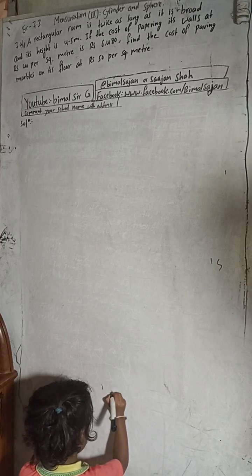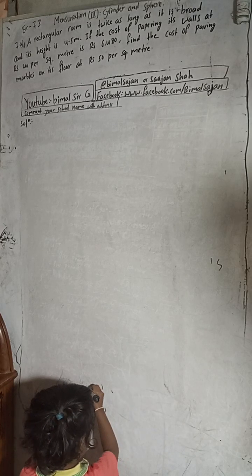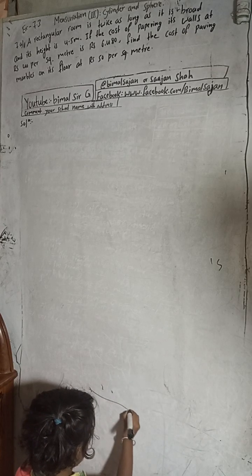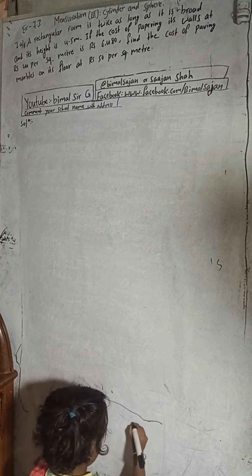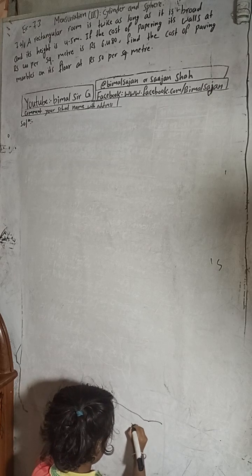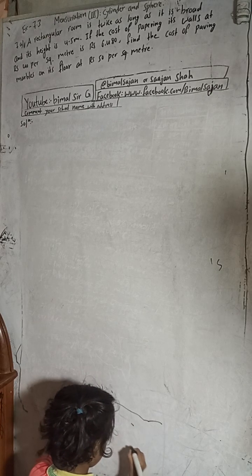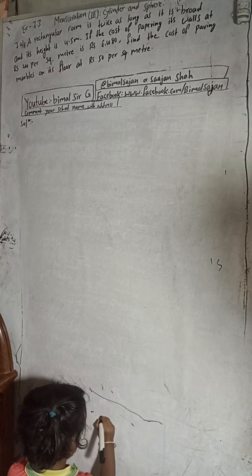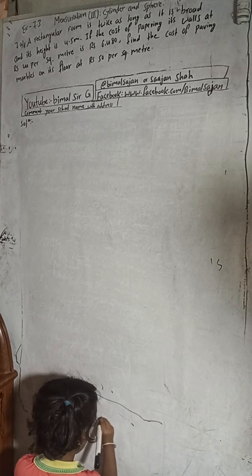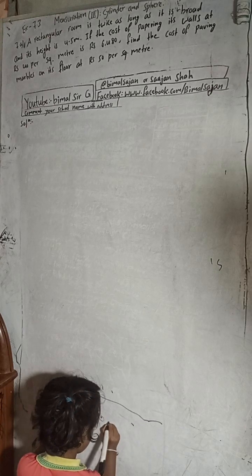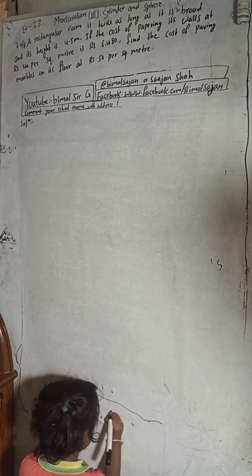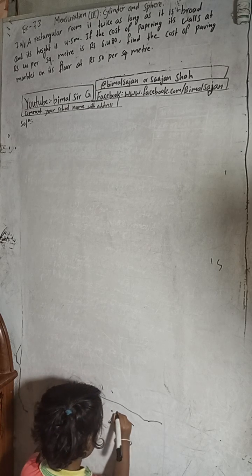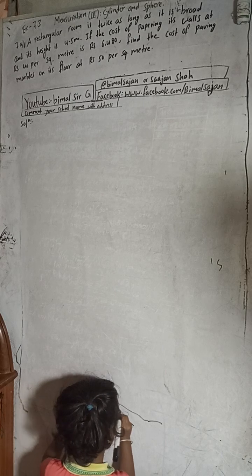Hi class 9 and 10 students, welcome back to Vimal Sarji YouTube channel. This is question number 7A, exercise 7.3, Mensuration, third part — cylinder and sphere.